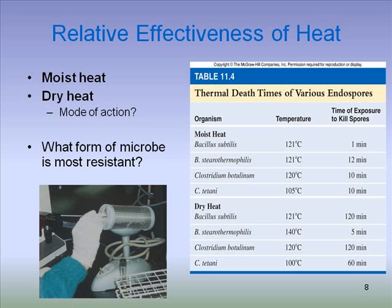Moist heat uses lower temperatures and shorter exposure times than dry heat, which requires moderate to high temperatures with longer exposure times. Moist heat works by coagulation and denaturation of proteins — causing them to unravel, melt, and stick together in large clumps — and also destroys membranes and DNA. Dry heat's mechanism is simply removal of water through dehydration, which also alters protein structure.